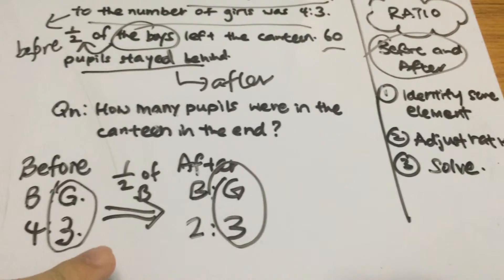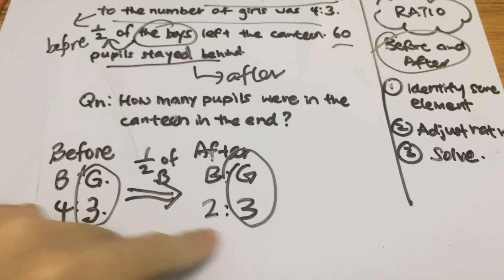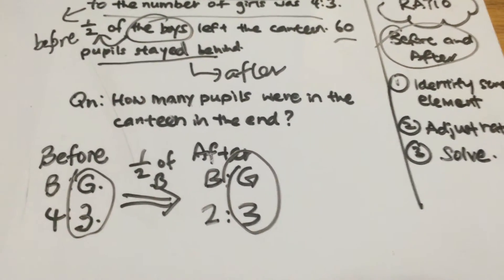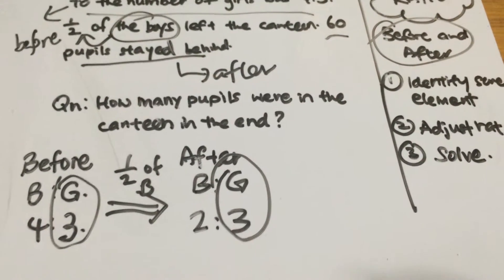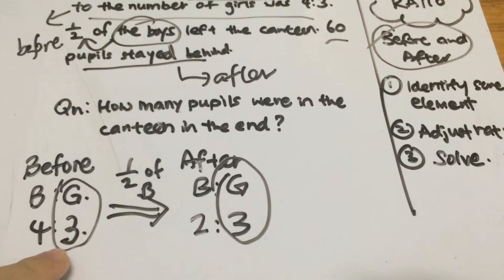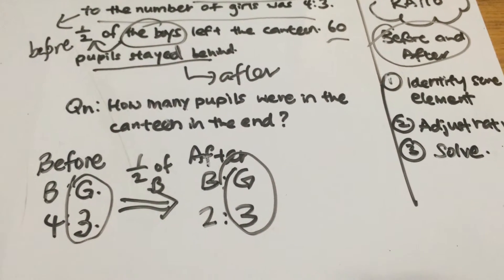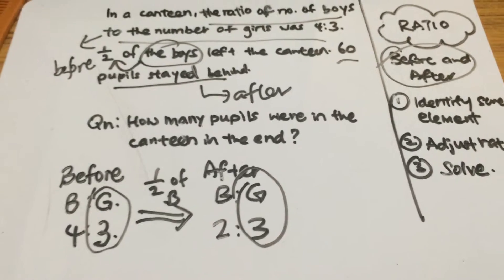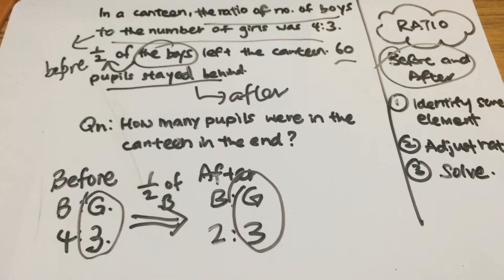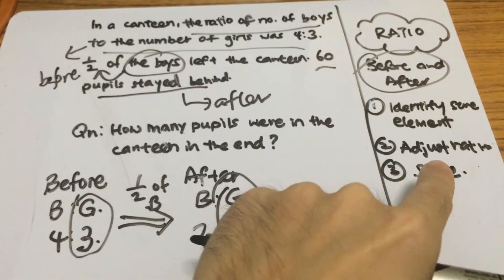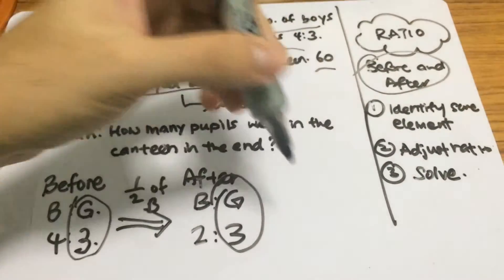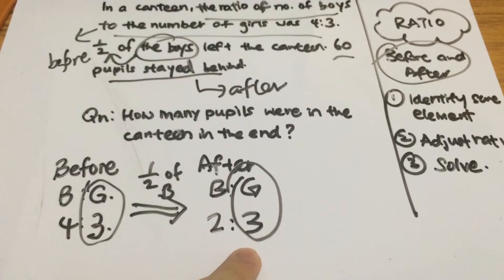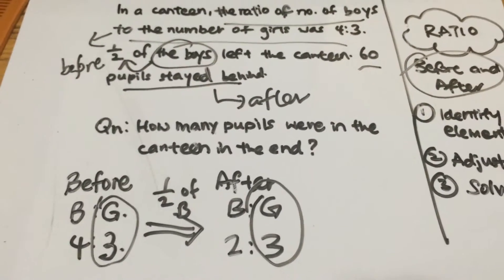The next step is to adjust the ratio. In this case, because the number of units of girls before and after is the same, we do not need to adjust. In cases where the number of units of girls before is not the same as after — which will be shown in the next video — you would need to adjust the ratio. But here, since the girl units match, we can straight away solve the problem.